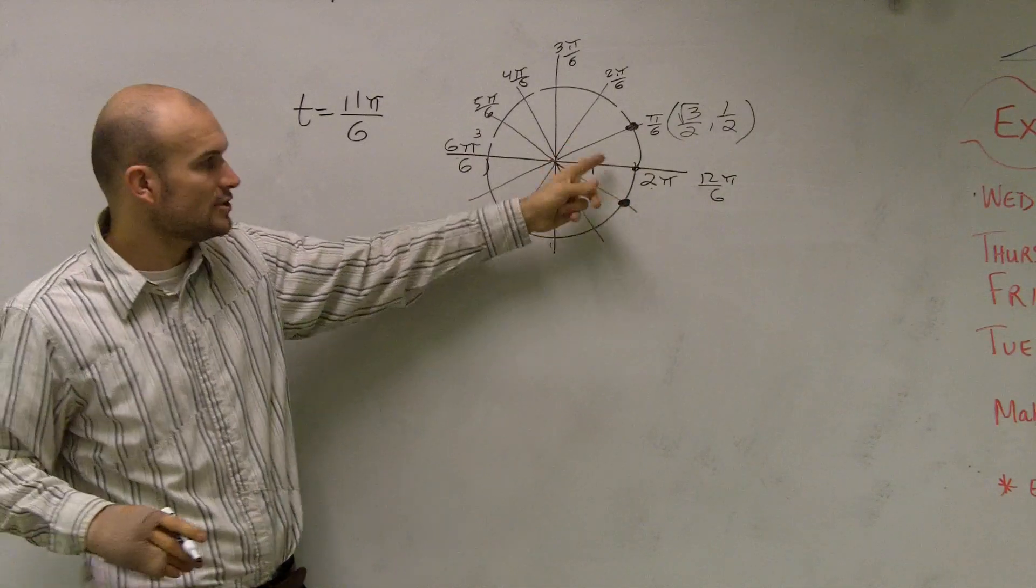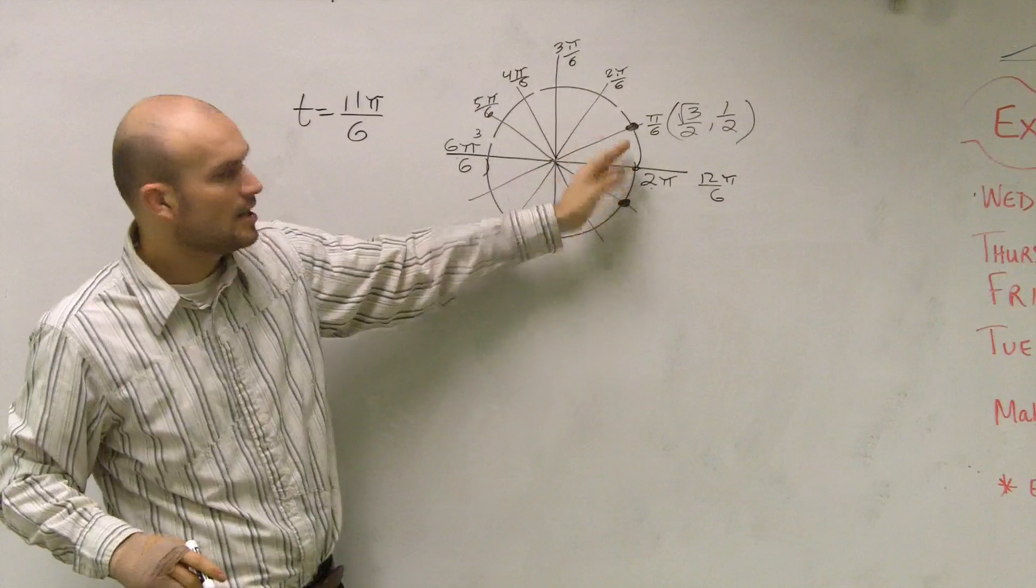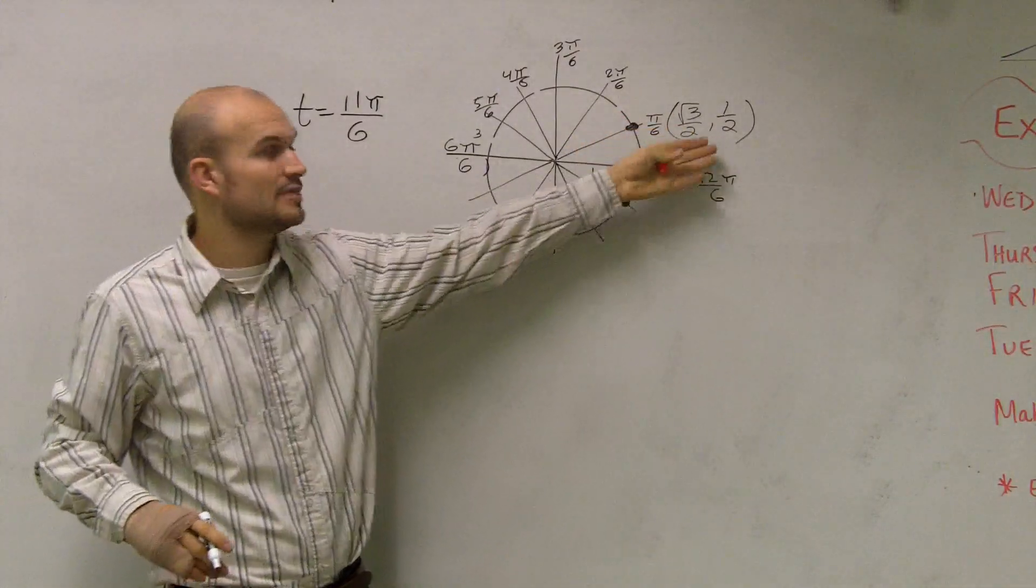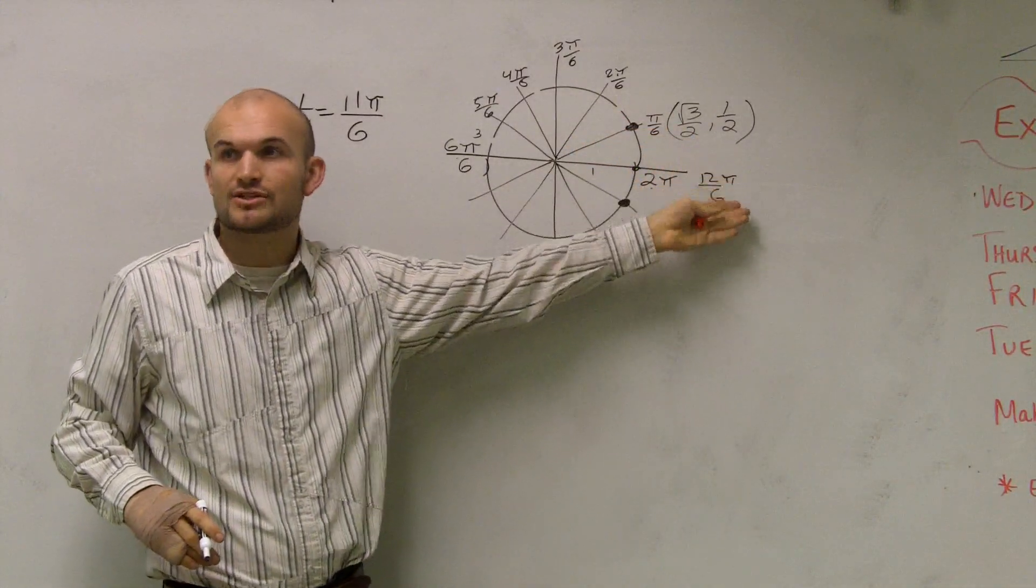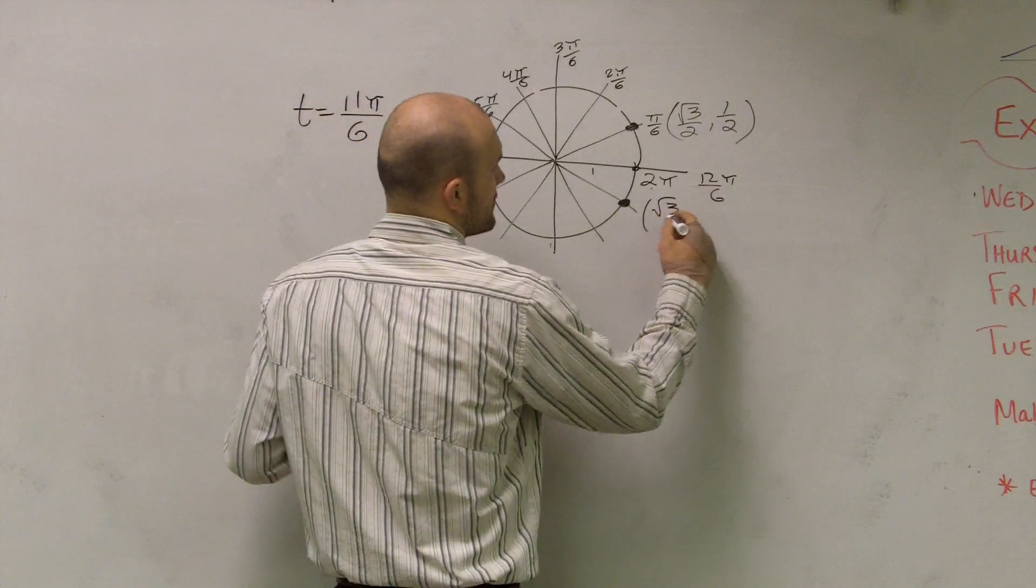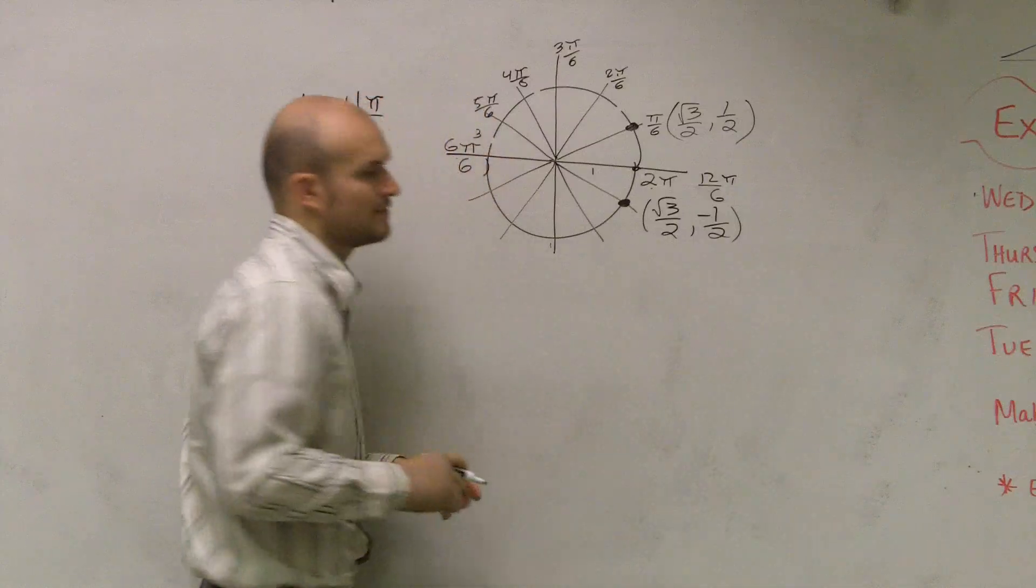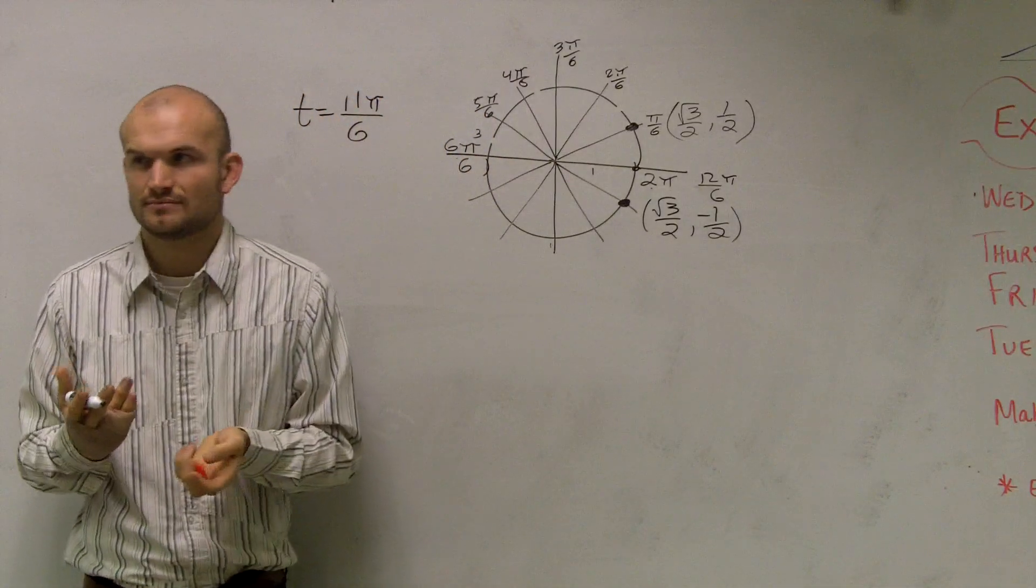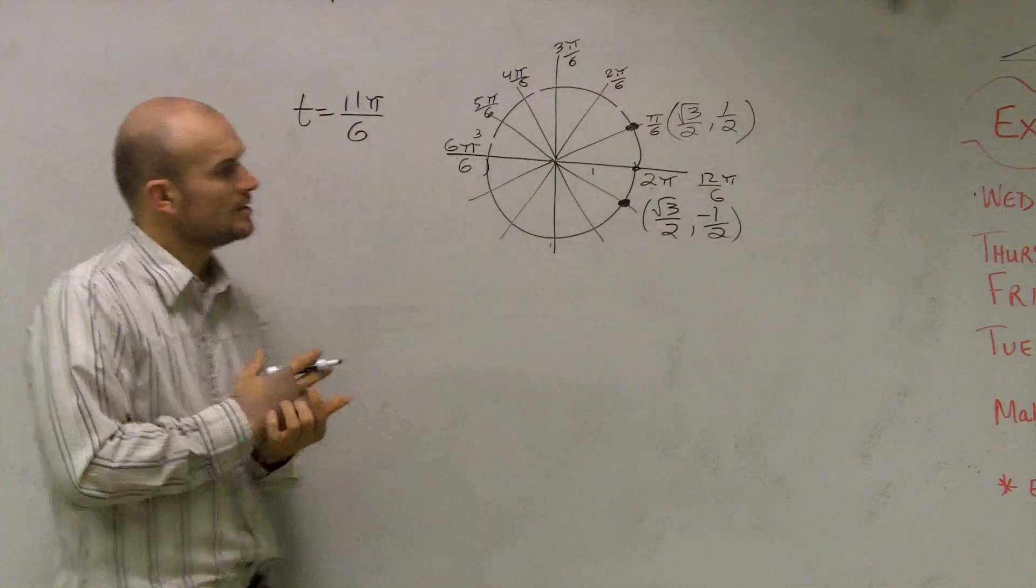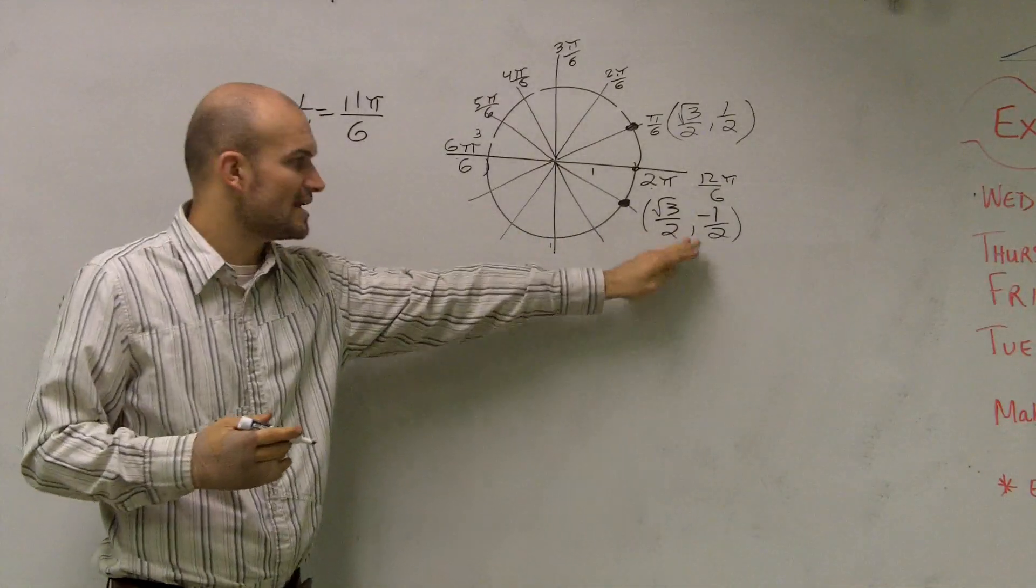So what's the only thing that changes? The x value is still not going to change. It looks like the x value is the exact same point. But the y value is now going to change and become negative. So this point is square root of 3 over 2, comma, negative 1 half. That's step number two, finding your coordinate point.